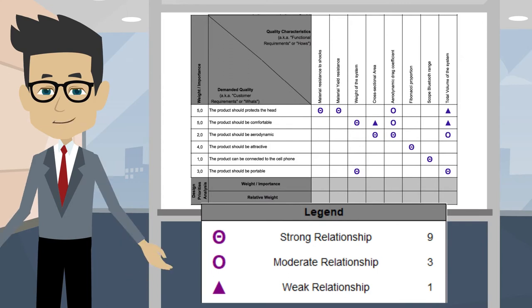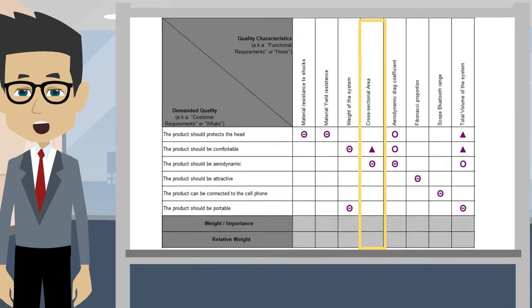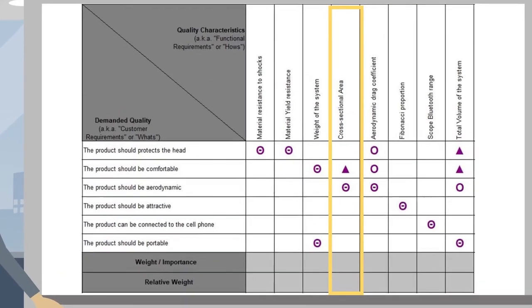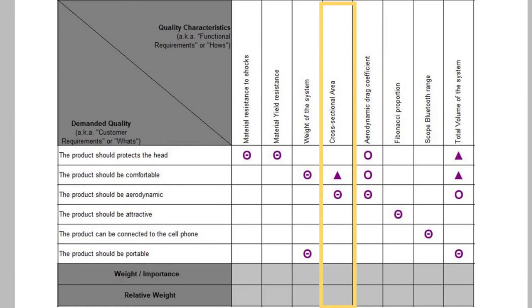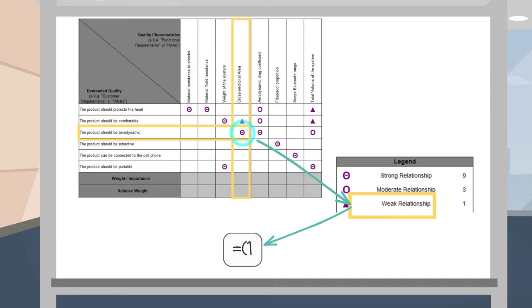Where nine was strong, three was medium, and one was weak. Well, for transversal area, let's identify those positions where there is a strong, medium, or weak relationship.